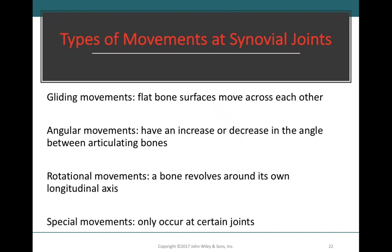This video covers part two of joints, starting with the different types of movements found at synovial joints. At synovial joints there are four major types of movements: gliding movements, angular movements, rotational movements, and special movements.